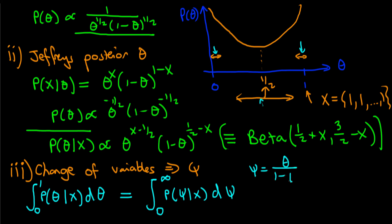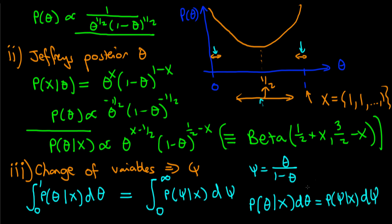To derive the change of variables rule, we remove the integral sign: p(theta | x) dθ = p(psi | x) dψ, which we rearrange to obtain p(psi | x) = p(theta | x) times dθ/dψ.